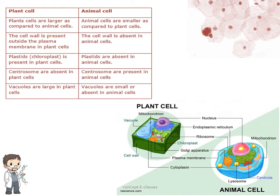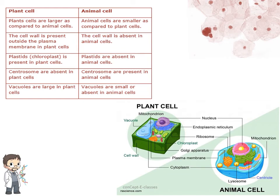Now a simple comparison between plant cells and animal cells: plant cells are quite large compared to animal cells. The cell wall is present in plant cells outside the plasma membrane, whereas the cell wall is absent in animal cells. Plastids like chloroplasts are present in plant cells but absent in animal cells. Centrosomes are absent in plant cells whereas they are present in animal cells. In plant cells the vacuoles are quite large, whereas in animal cells vacuoles are small or sometimes absent.